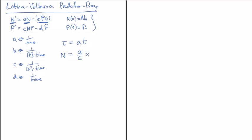I'm going to use x as the non-dimensional version of n. For p, I'm going to do something similar: a divided by b gives us units of p in the numerator with times canceling, and I'll call that rescaled variable y. Keep in mind that n is a function of t, x is a function of τ, p is a function of t, and y is a function of τ. So when I equate them I have to think in terms of t being plugged in, and write at in there — that's how we translate from n to x and p to y.